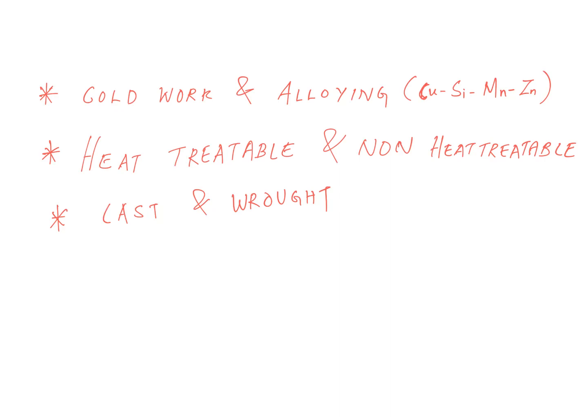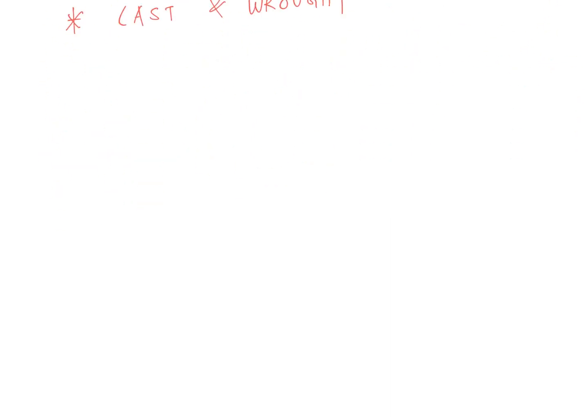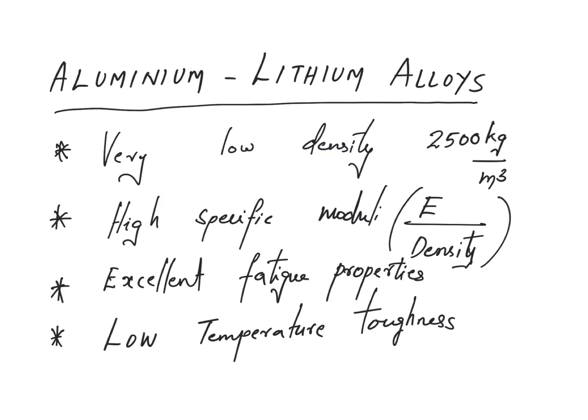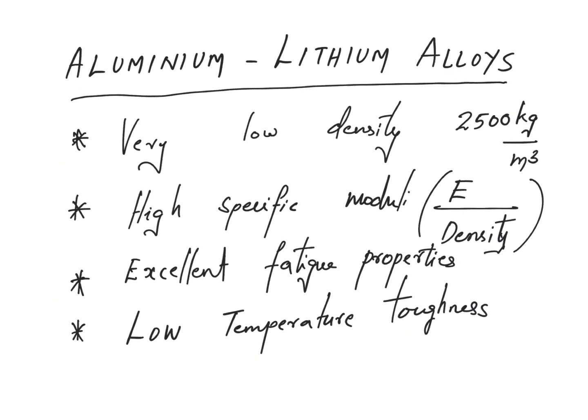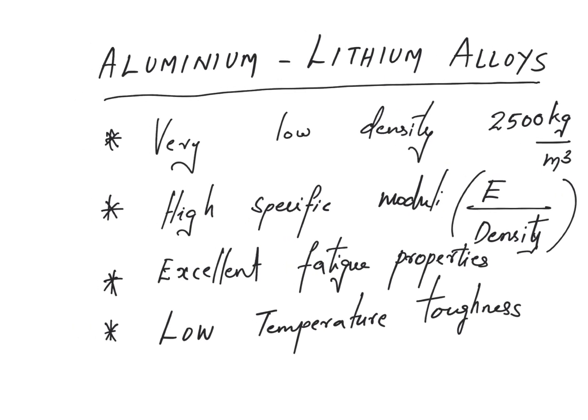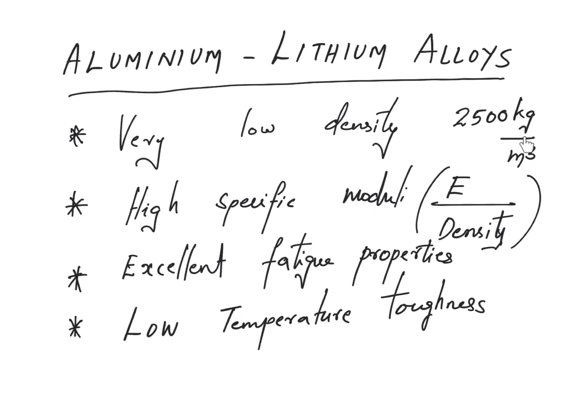Aluminum alloys are widely used in automotive parts, aircraft structural parts, and to manufacture beverage cans. A particular kind called aluminum-lithium alloys has very good characteristics: very low density around 2500 kg/m³, very high specific modulus (ratio of Young's modulus to density), excellent fatigue properties, and low-temperature toughness. That's why for cryogenic tanks in space programs we use these alloys. They are very costly, but have an amalgamation of very good properties which is exactly what is needed in the aerospace industry.